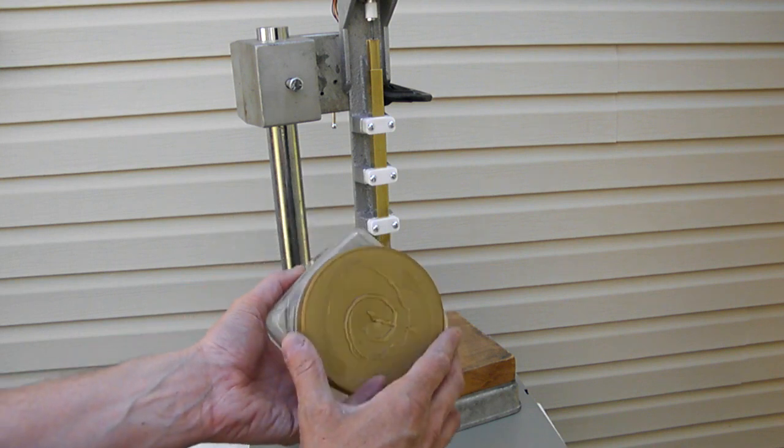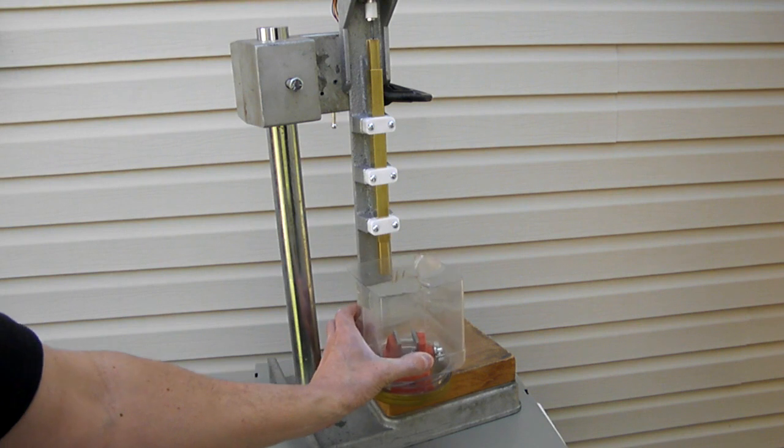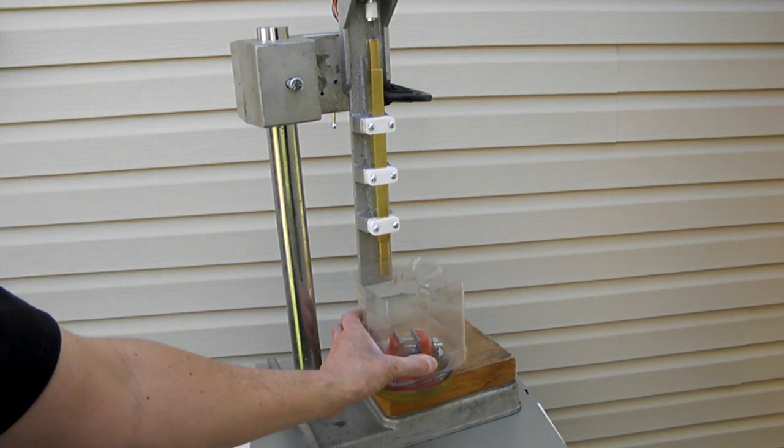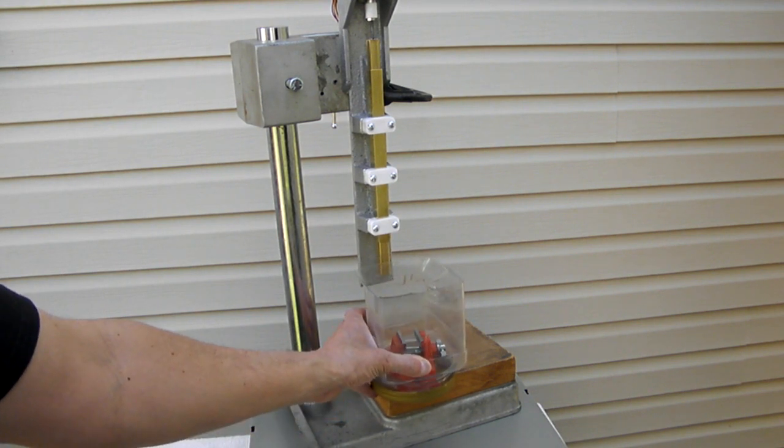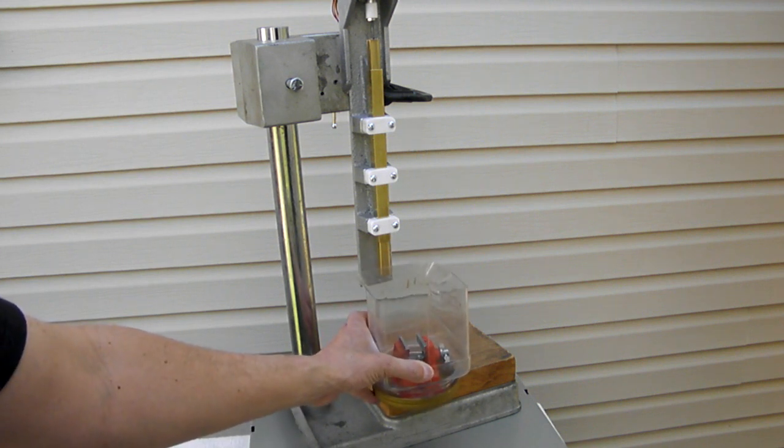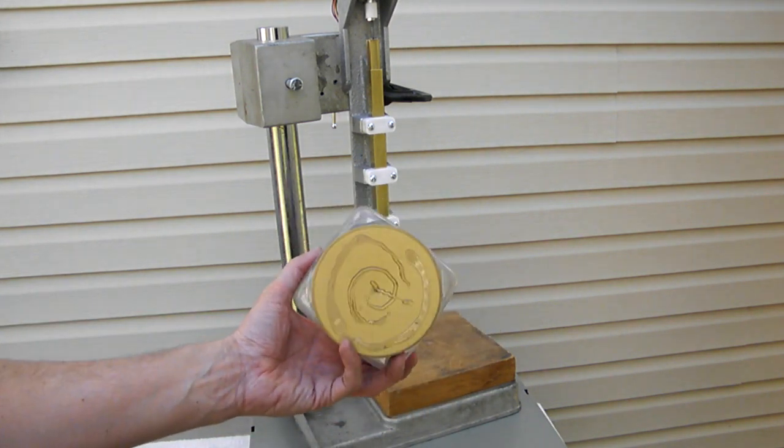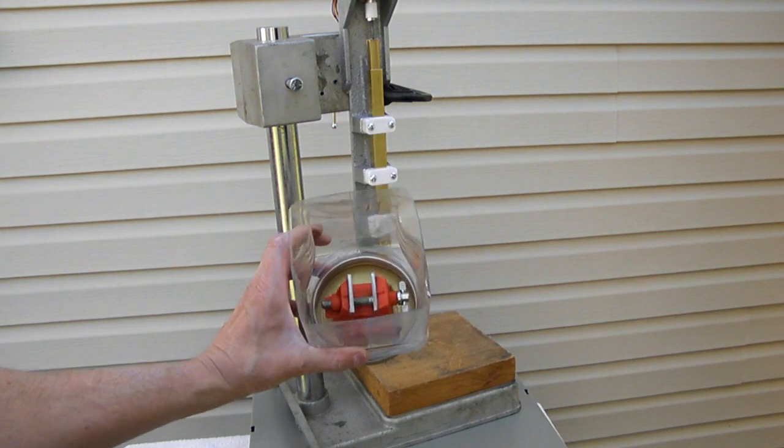The other thing that I do quite often is I'll hot glue this either down to a platform, or to something heavy like a brick. That way if the EDM sticks to the work piece, it doesn't lift the whole thing up as you're doing the work. That's why there's a little bit of hot glue residue on the bottom there.